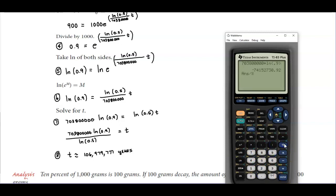And then we can divide that by the natural log of 0.5, which gives us approximately 106,979,777 years.